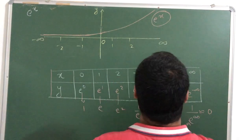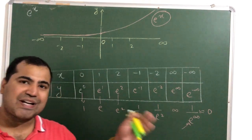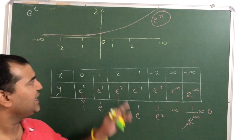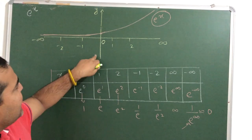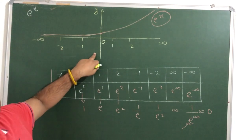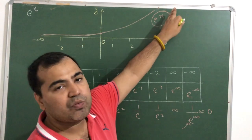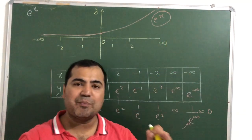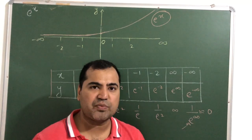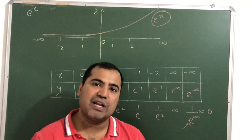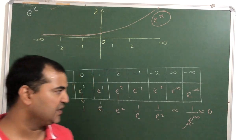Why did I plot this? Because I want you to understand that e raised to x will never take any negative value — this value is always positive. This is the main idea to understand about the graph of e raised to x. Now, inequalities involving e raised to x will become easy.